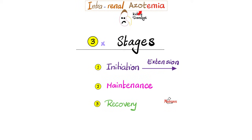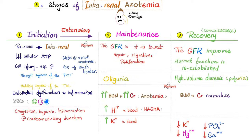What are the three stages of renal azotemia? Initiation, maintenance, and recovery. Some textbooks divide them into four stages: initiation, extension, maintenance, and recovery.